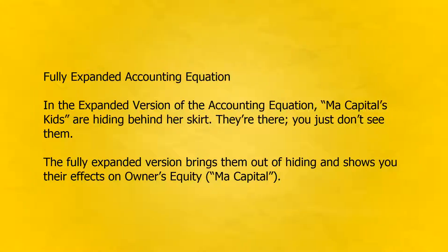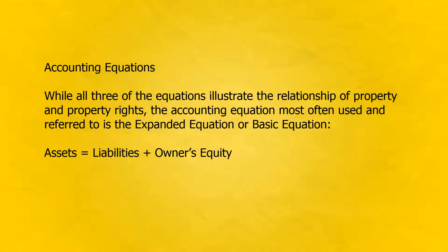Fully expanded accounting equation. In the expanded version of the accounting equation, ma capital's kids are hiding behind her skirt — they're there, you just don't see them. The fully expanded version brings them out of hiding and shows you their effects on owner's equity ma capital. While all three equations illustrate the relationship of property and property rights, the accounting equation most often used and referred to as the expanded or basic equation is: assets equals liabilities plus owner's equity.